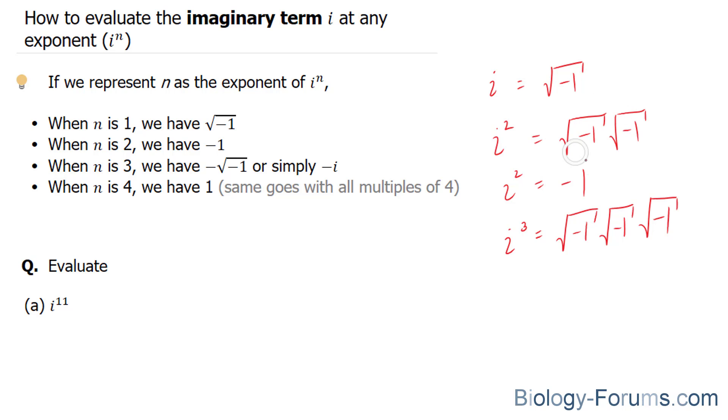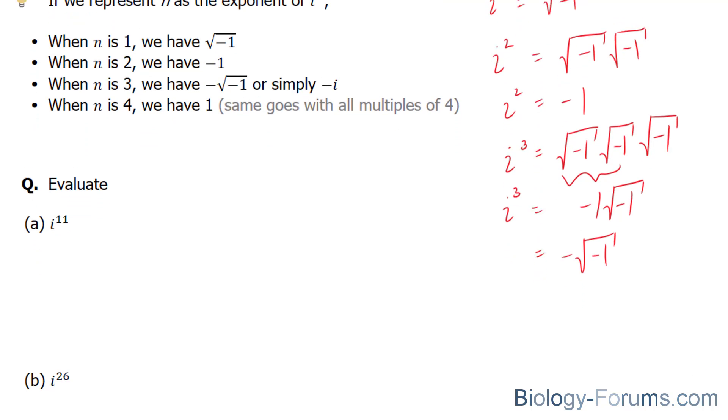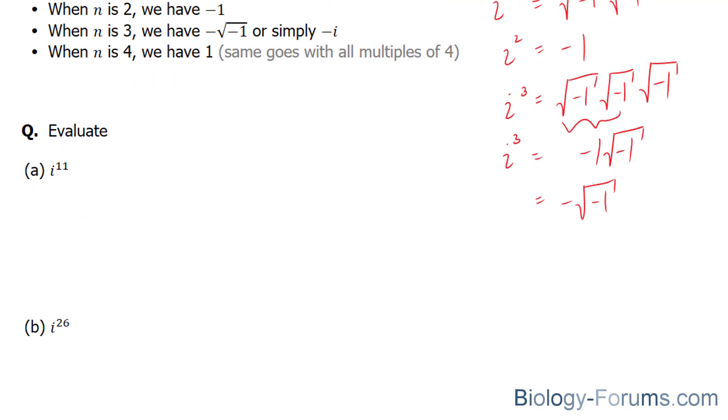Now, we just determined that two square roots of negative 1 is equal to negative 1. Therefore, the cube of i is equal to negative square root of negative 1. In other words, negative this term. And to further simplify this part,